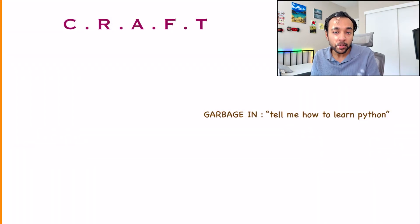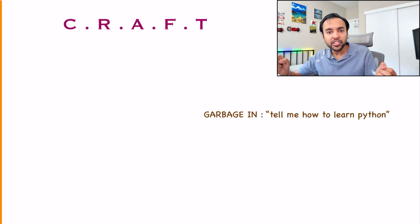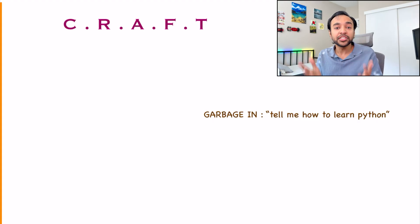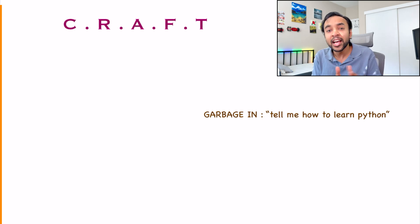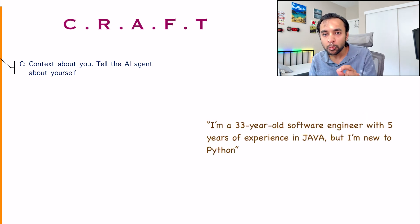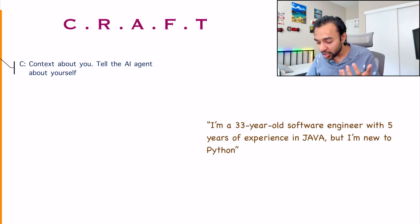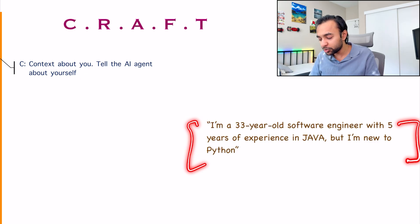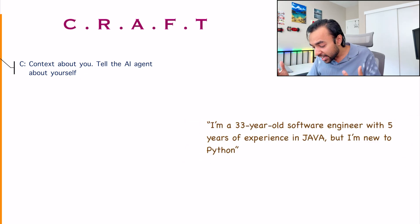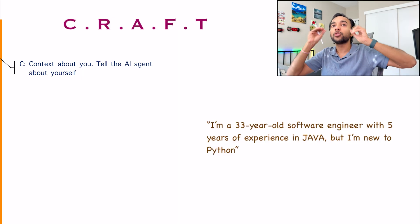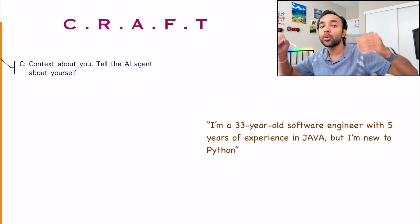What is an example of a bad prompt? If you just tell the AI, 'Tell me how to learn Python,' this prompt is very ambiguous. The AI doesn't know if you're a junior or senior, what your experience is, where you want to go, or what your timeframe is. You will just get a very generic answer. The first thing you need to provide is Context — explaining your current situation. For example: 'I am a 33-year-old software engineer with five years of experience in Java and I am new to Python.' Now the AI is building a profile about you and has context to target its response.